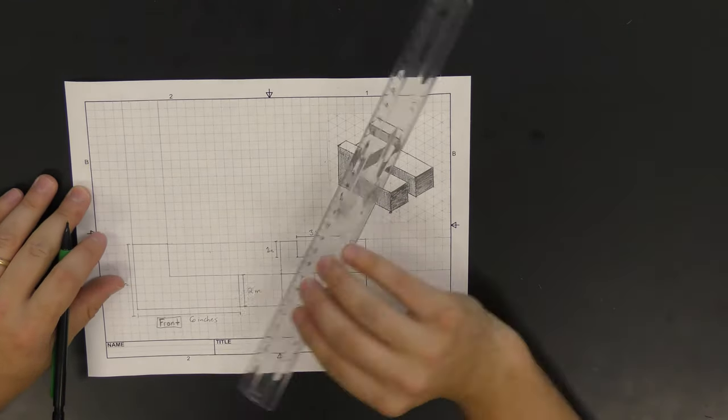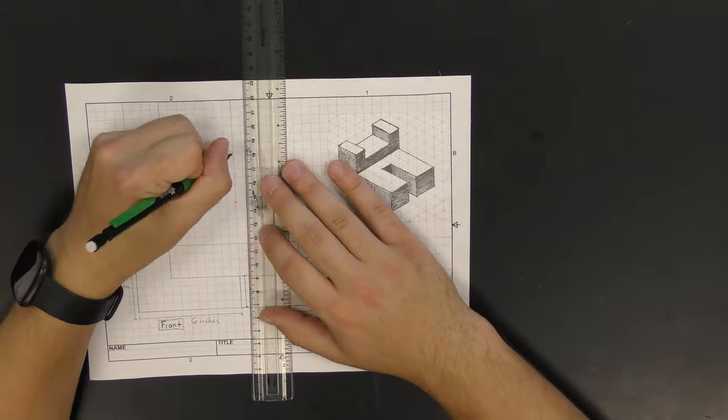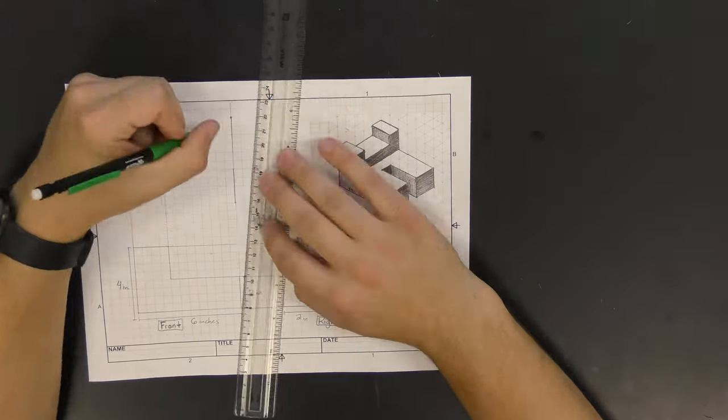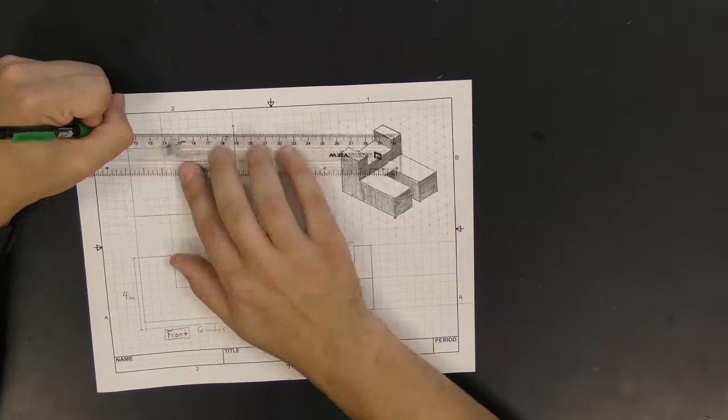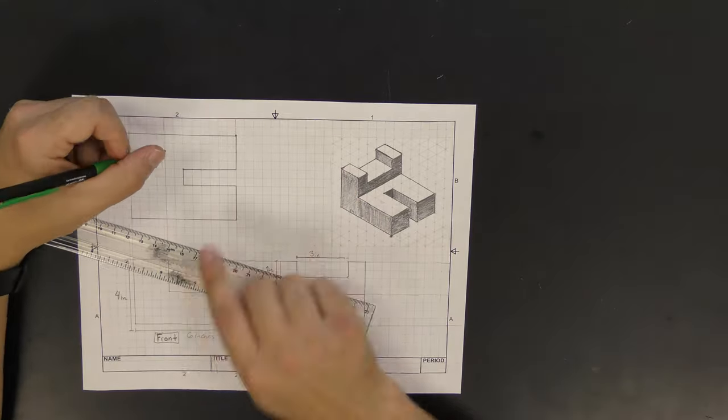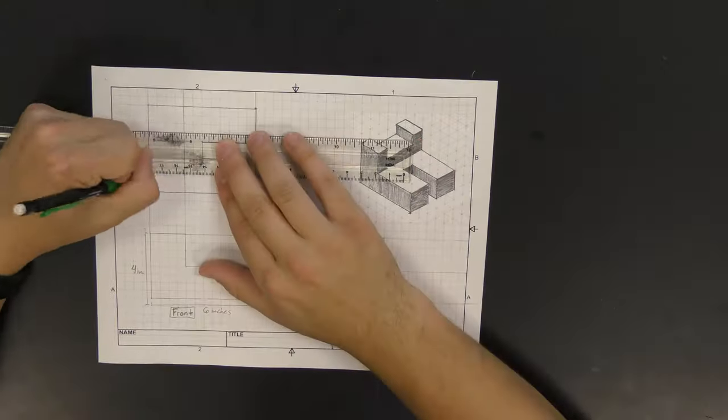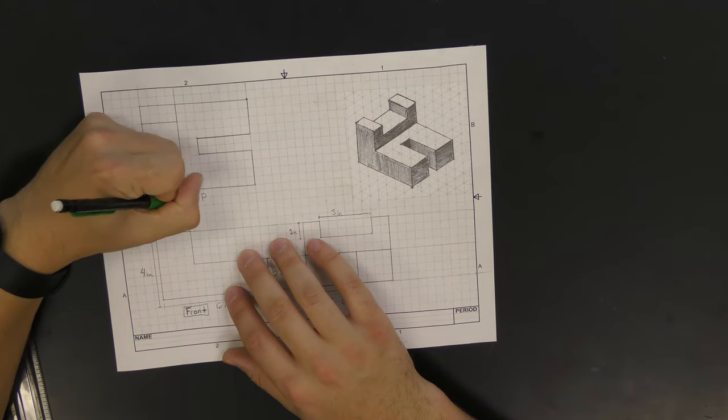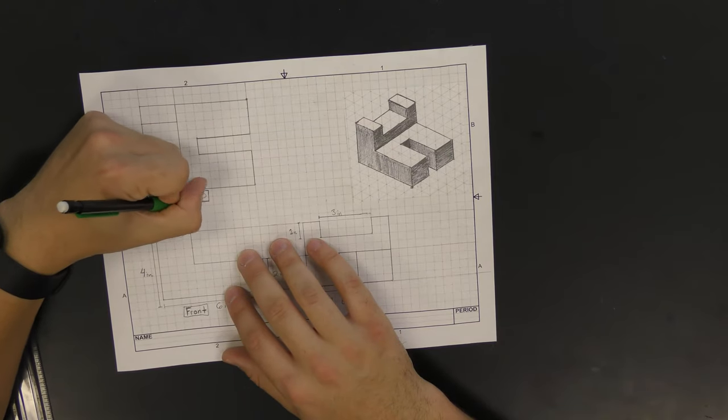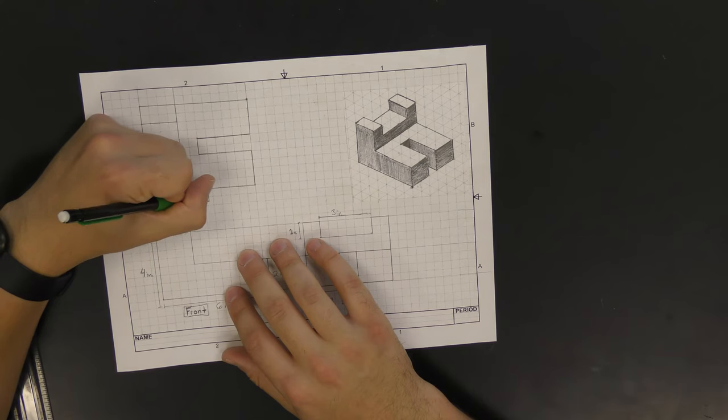The last view to be sketched is the top view. This is where putting those construction lines in is really helpful. It helps us to make sure that our front and our top view are created with the same scale. This is helpful because it allows us to make sure that we are drawing our object in the same scale on all three perspectives.